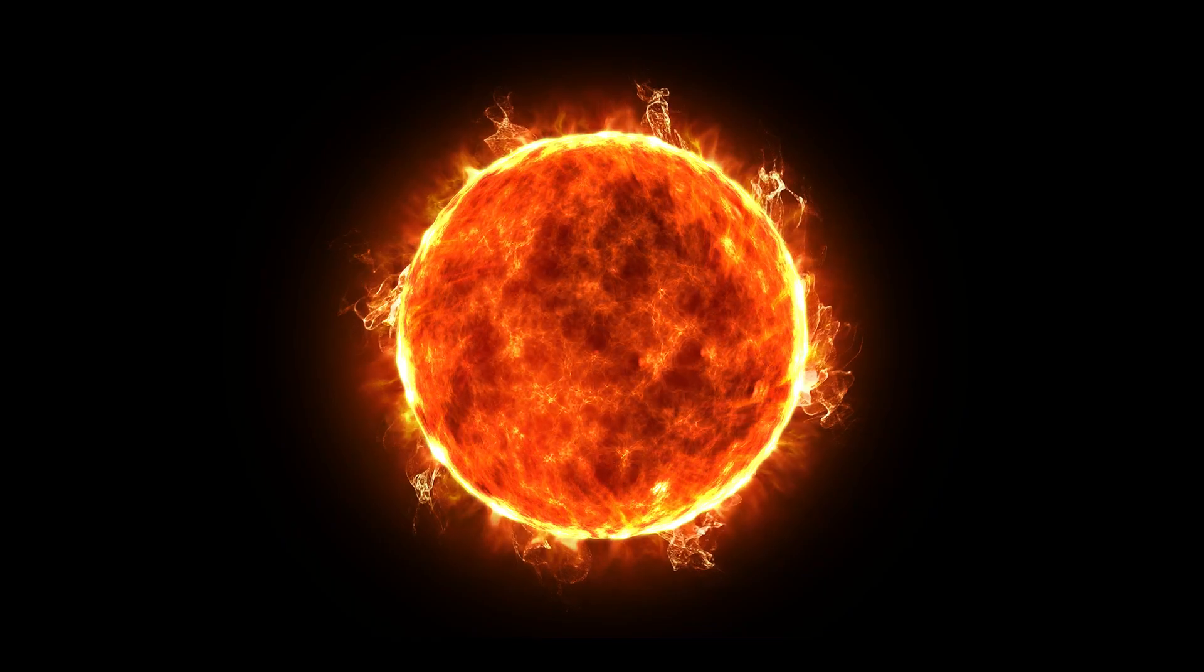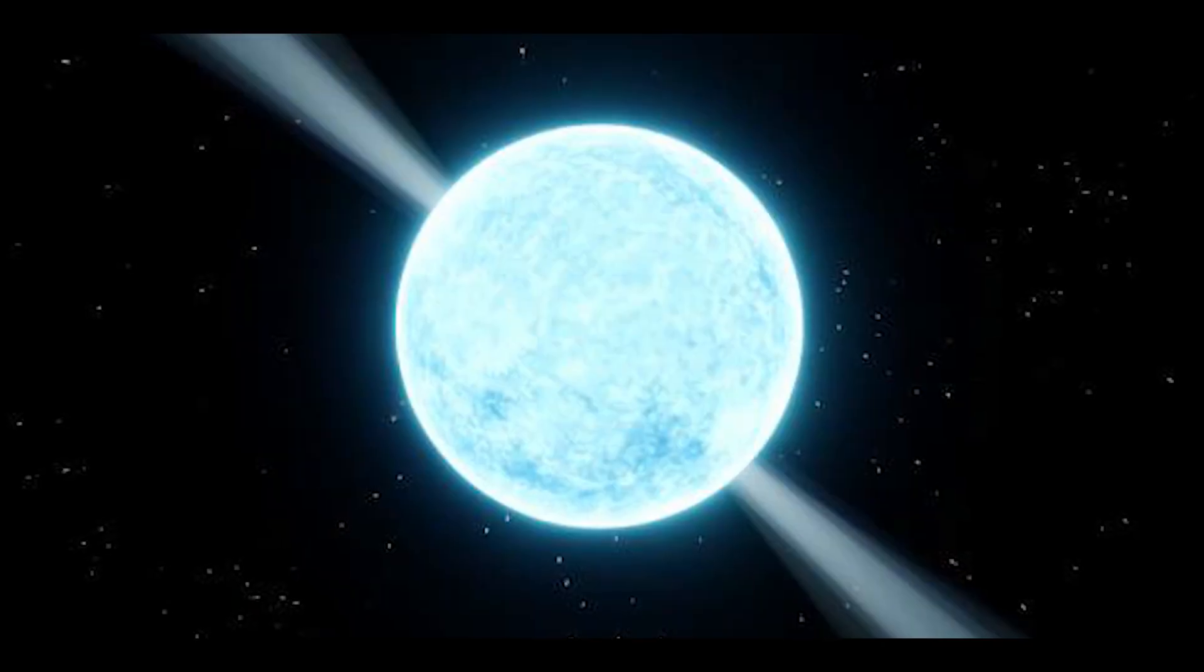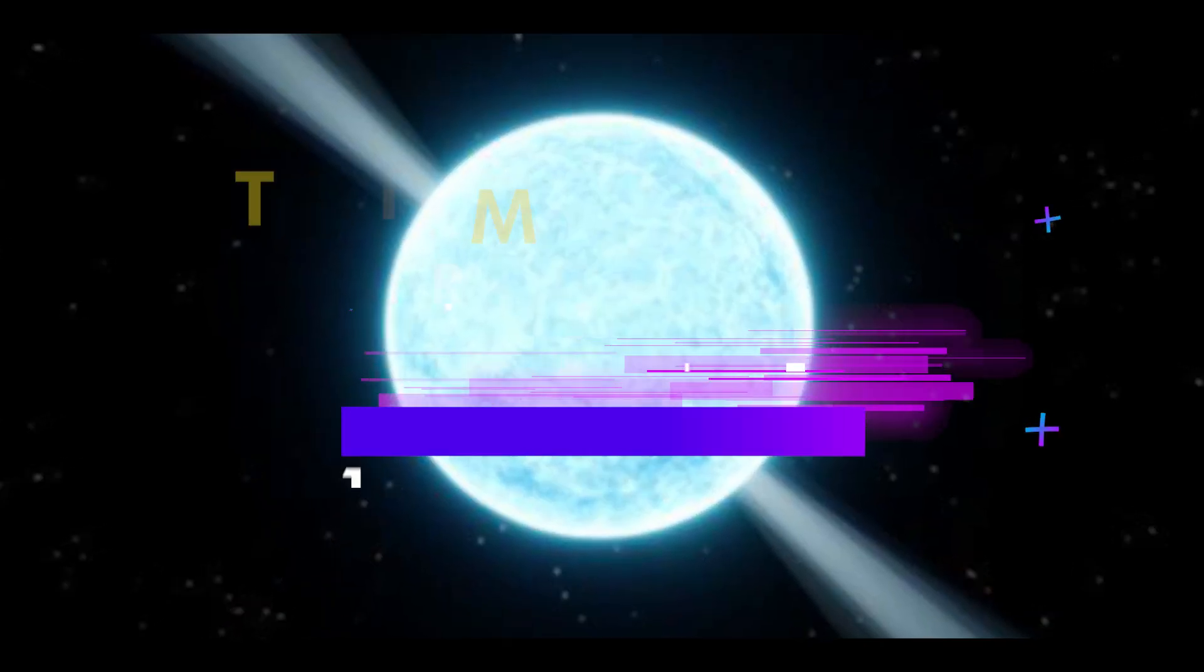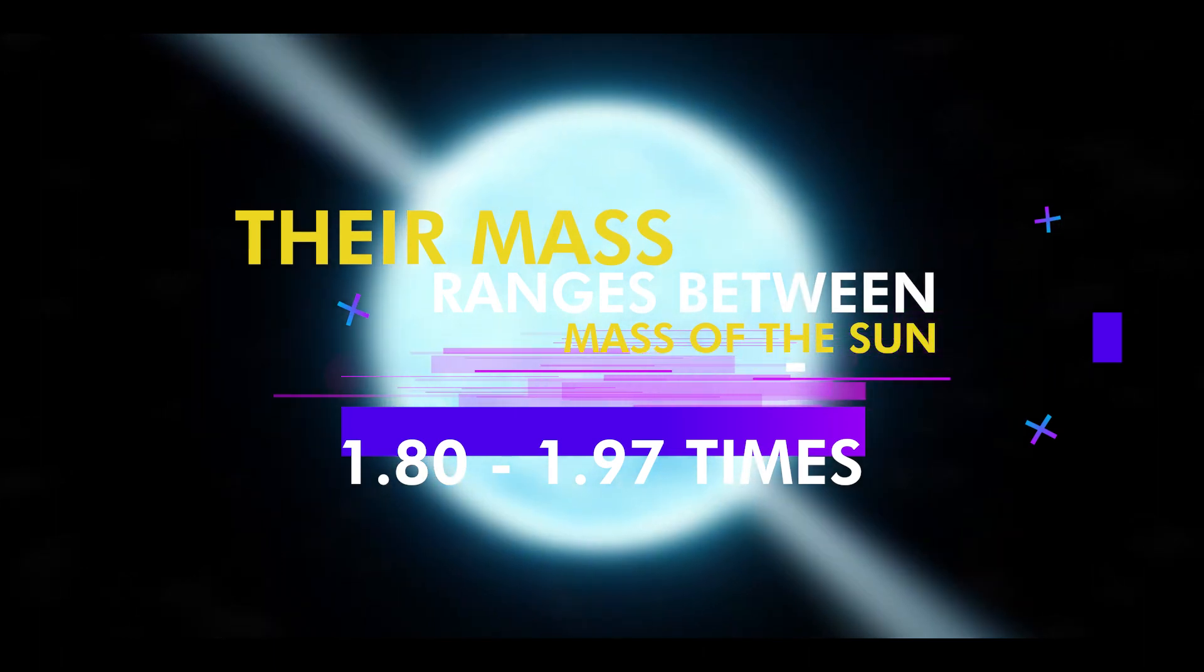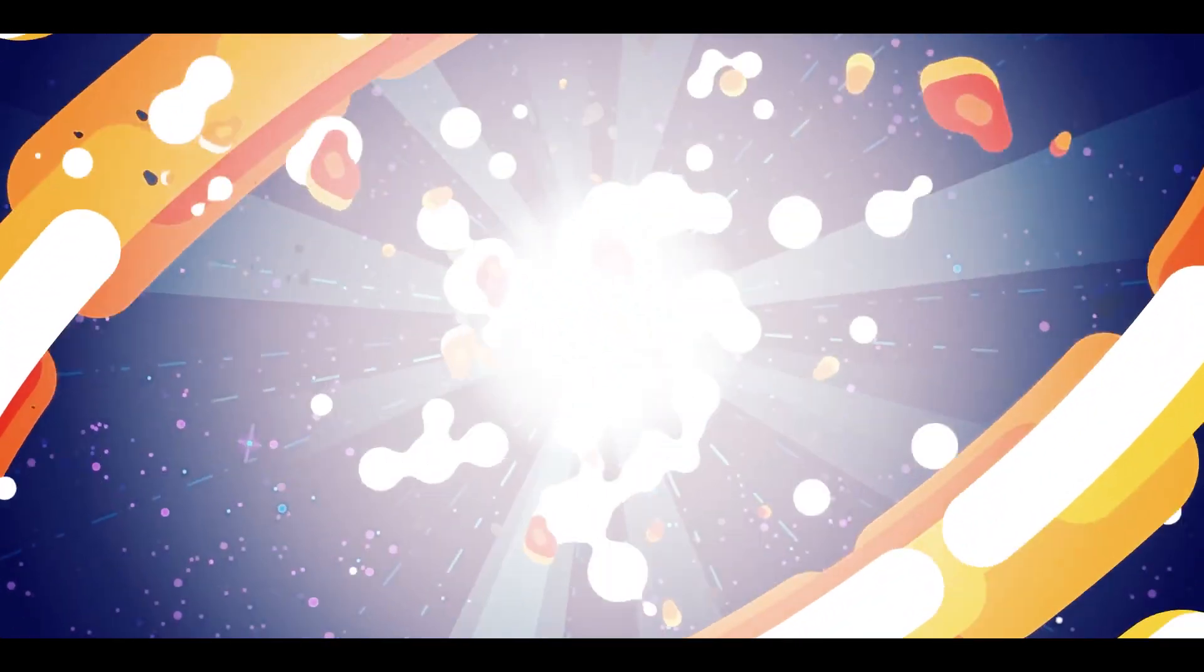In most cases, pulsars have a mass that is 1.35 times the mass of the sun. Their mass ranges between 1.18 and 1.97 times the mass of the sun. When the core of a violently exploding star collapses inward and becomes compressed, a neutron star is formed.